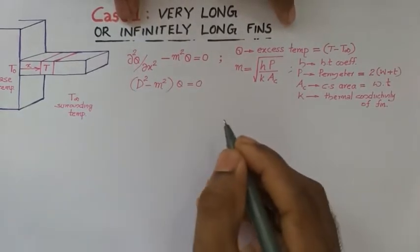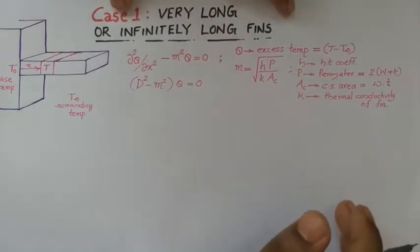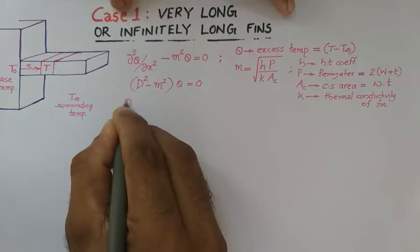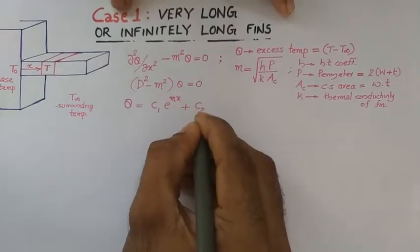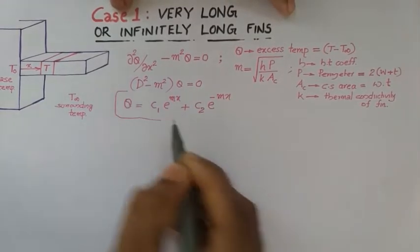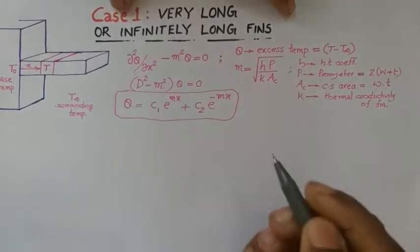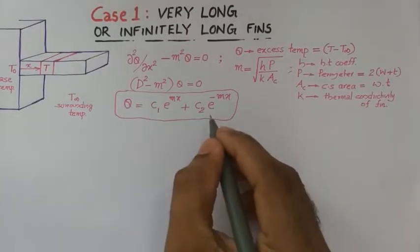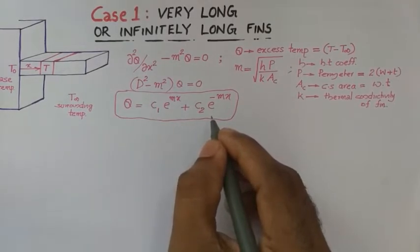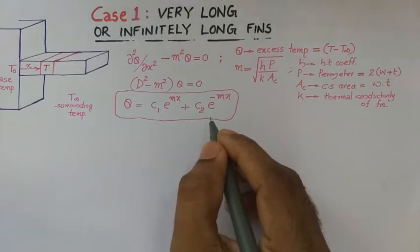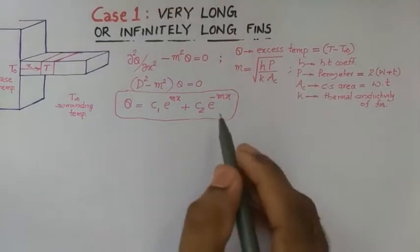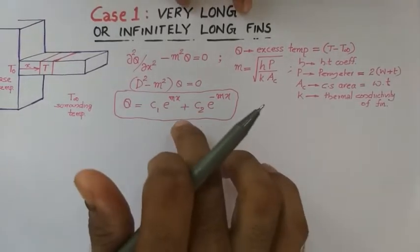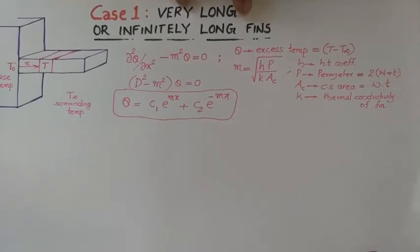Where D is the differential operator standing for d/dx. Solving the auxiliary equation, the general solution for theta in terms of x is: theta equals c1 times e raised to mx plus c2 times e raised to minus mx. Here c1 and c2 are two constants to be determined from the boundary conditions.